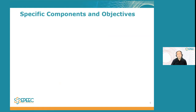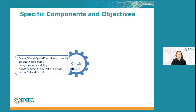Now I'm going to list the specific objectives and components as a summary. First, our shared memory programming model is OMS. In OMS, we have developed support for accelerator kernels in high-level programming directives — OpenACC and OpenMP. We have also included capabilities for tasking within accelerators, energy-aware scheduling, heterogeneous memory management, and support for the latest features of Fortran and C++.